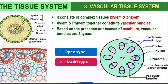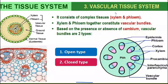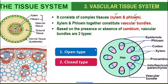The third tissue system is known as the vascular tissue system, which consists of xylem and phloem. Xylem helps transport water and minerals, while phloem transports the food prepared in the leaves. Together they are known as vascular bundles.